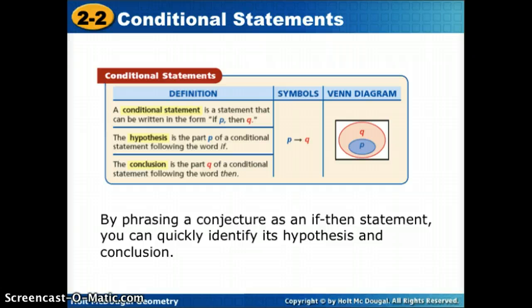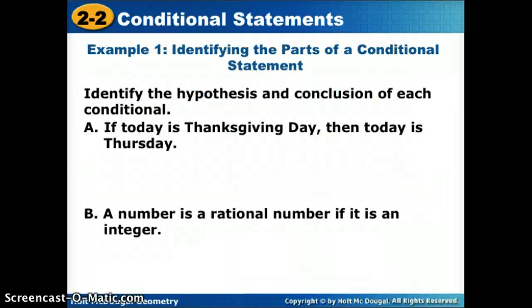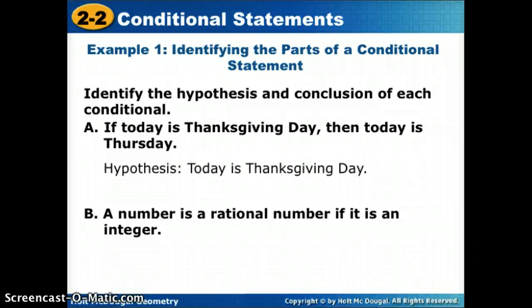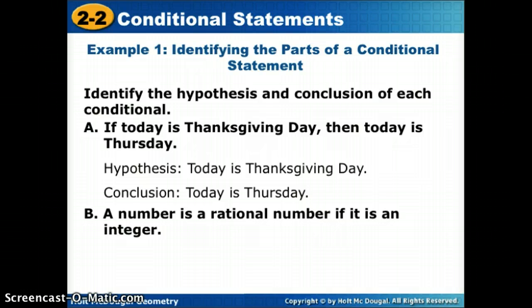By phrasing a conjecture as an if-then statement, you can quickly identify its hypothesis and conclusion. Last time we talked about a conjecture, which was somewhat like an educated guess. In if-then form, it's easy to pick out the hypothesis and conclusion. For example: 'If today is Thanksgiving Day, then today is Thursday.' The hypothesis is 'today is Thanksgiving Day,' and the conclusion is 'today is Thursday.' If I hear it's Thanksgiving Day, my conclusion is it must be Thursday.